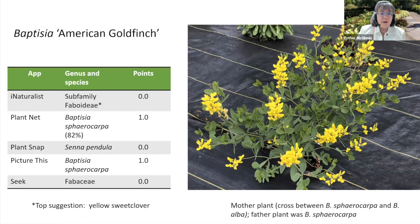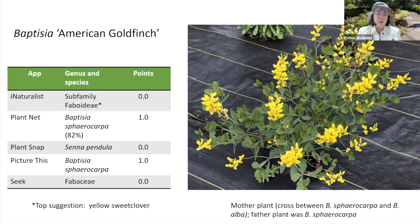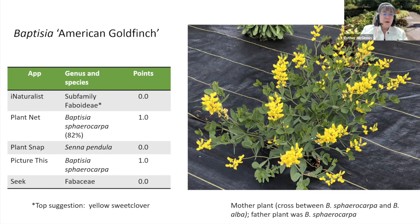I threw a little bit of a curveball here. This is Baptisia 'American Goldfinch.' I looked up the patent to determine the parentage — there is no specific epithet because it's a cross between species. The mother plant is a cross between Baptisia sphaerocarpa and Baptisia alba, and the father plant is fully Baptisia sphaerocarpa, so three quarters of the genetic material is that species. I predetermined I would give a full point if the app identified Baptisia sphaerocarpa. PlantNet and PictureThis were able to identify it to species level. iNaturalist got down to a subfamily and suggested yellow sweet clover — which is definitely not yellow sweet clover.